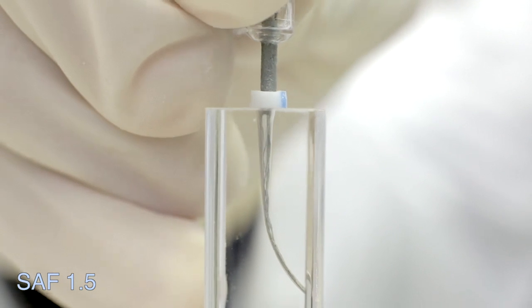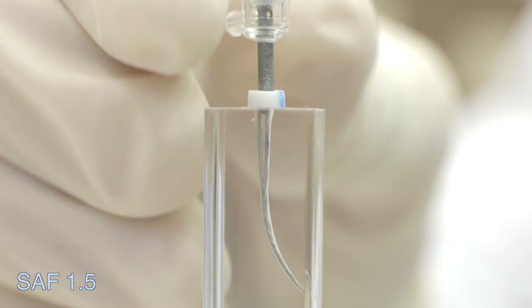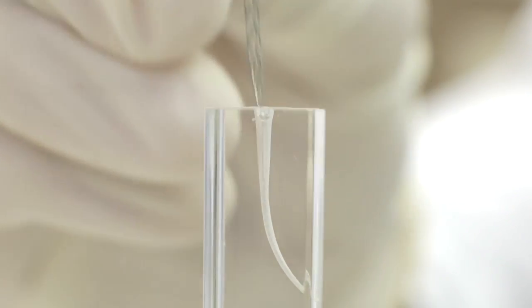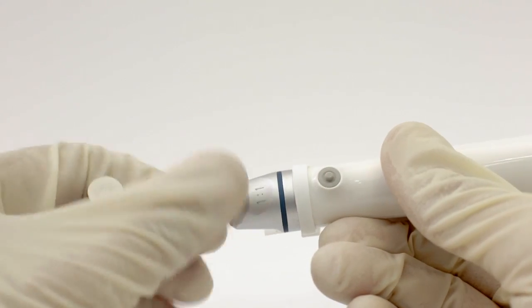Use light pecking motions to insert the SAF to working length. If resistance to insertion is encountered, stop and re-establish glide path. Excessive apical pressure at this stage may damage the file.